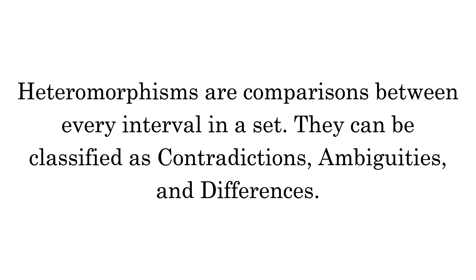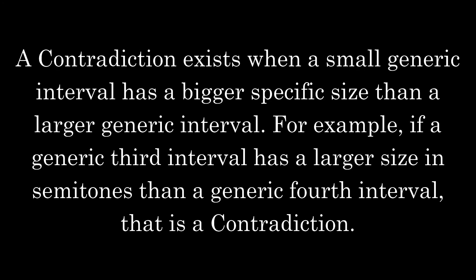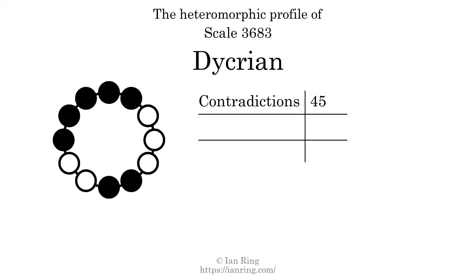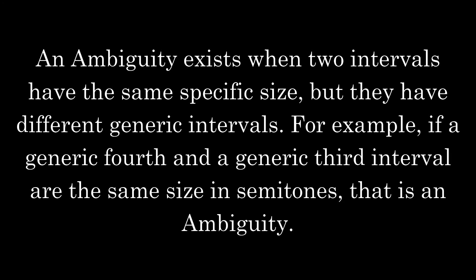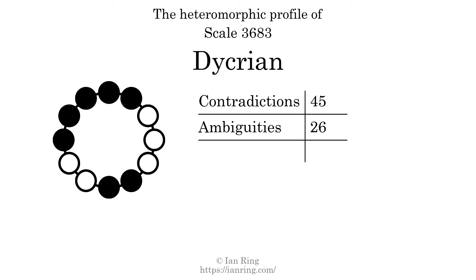Heteromorphisms are comparisons between every interval in a set. They can be classified as contradictions, ambiguities, and differences. A contradiction exists when a small generic interval has a bigger specific size than a larger generic interval. For example, if a generic third interval has a larger size in semitones than a generic fourth interval, that is a contradiction. The number of contradictions in this scale is 45. An ambiguity exists when two intervals have the same specific size but different generic intervals. The number of ambiguities in this scale is 26.